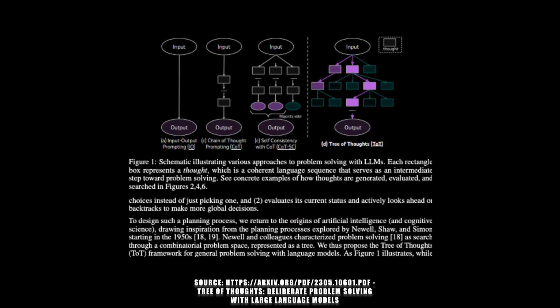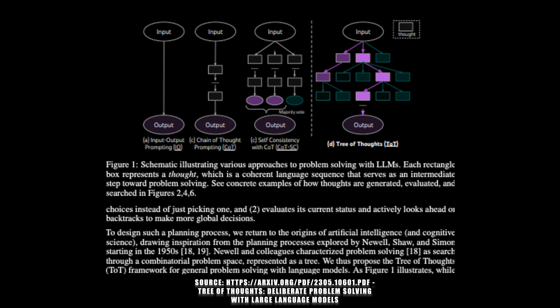In order to achieve this, the developers of Tree of Thoughts suggested generating these branches through a formal process. They use some work done on AI back in the 1950s as the basis for this approach. This formal process breaks down into four steps.